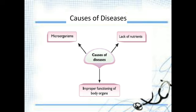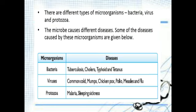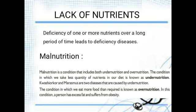Those three reasons are microorganisms, lack of nutrients, and improper functioning of body organs. Microorganisms are very minute organisms that can be seen under the microscope. They are found in water, food, soil, waste, etc. Some of the microorganisms are bacteria, virus, and protozoa. The diseases caused by these microorganisms have been discussed in previous sessions.